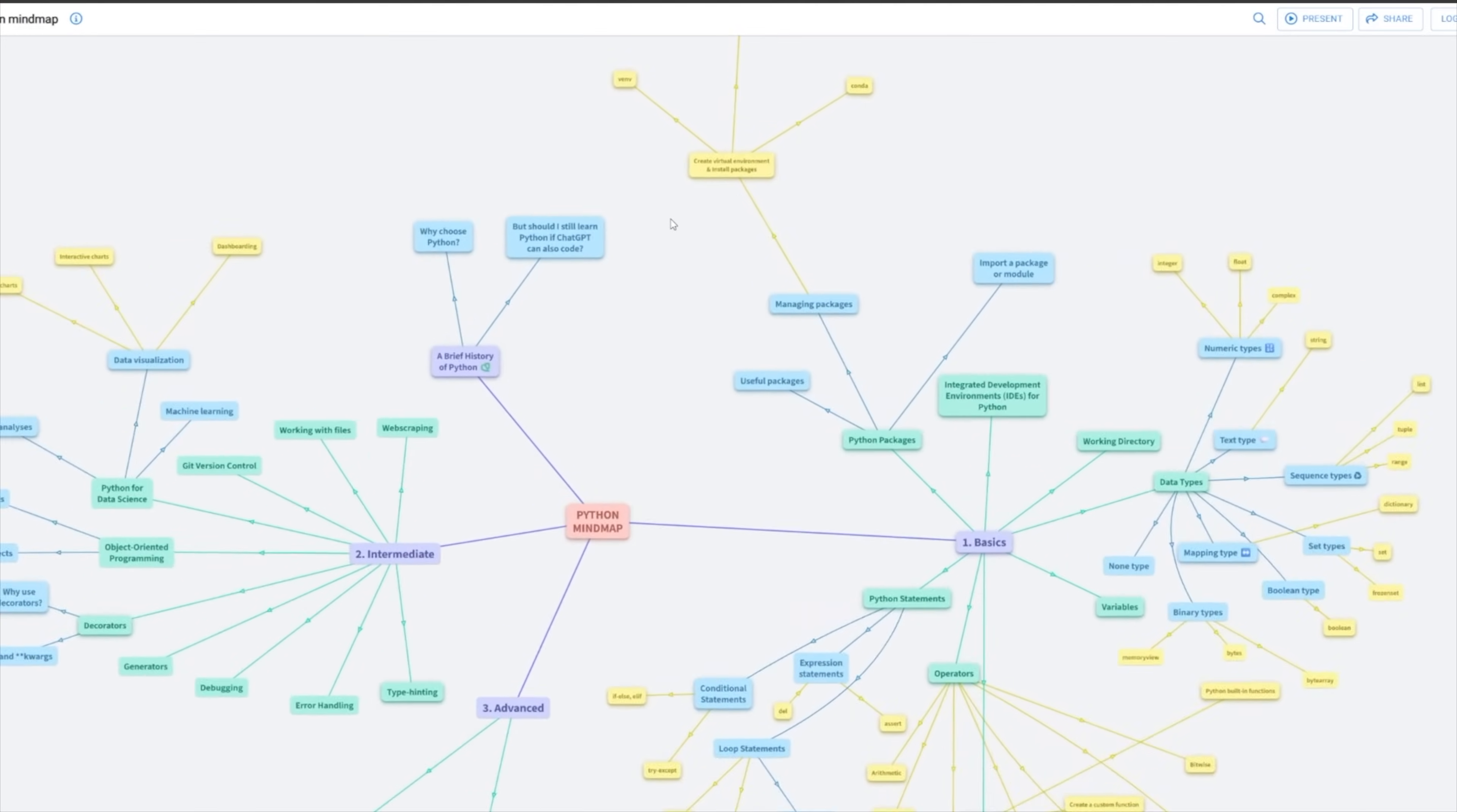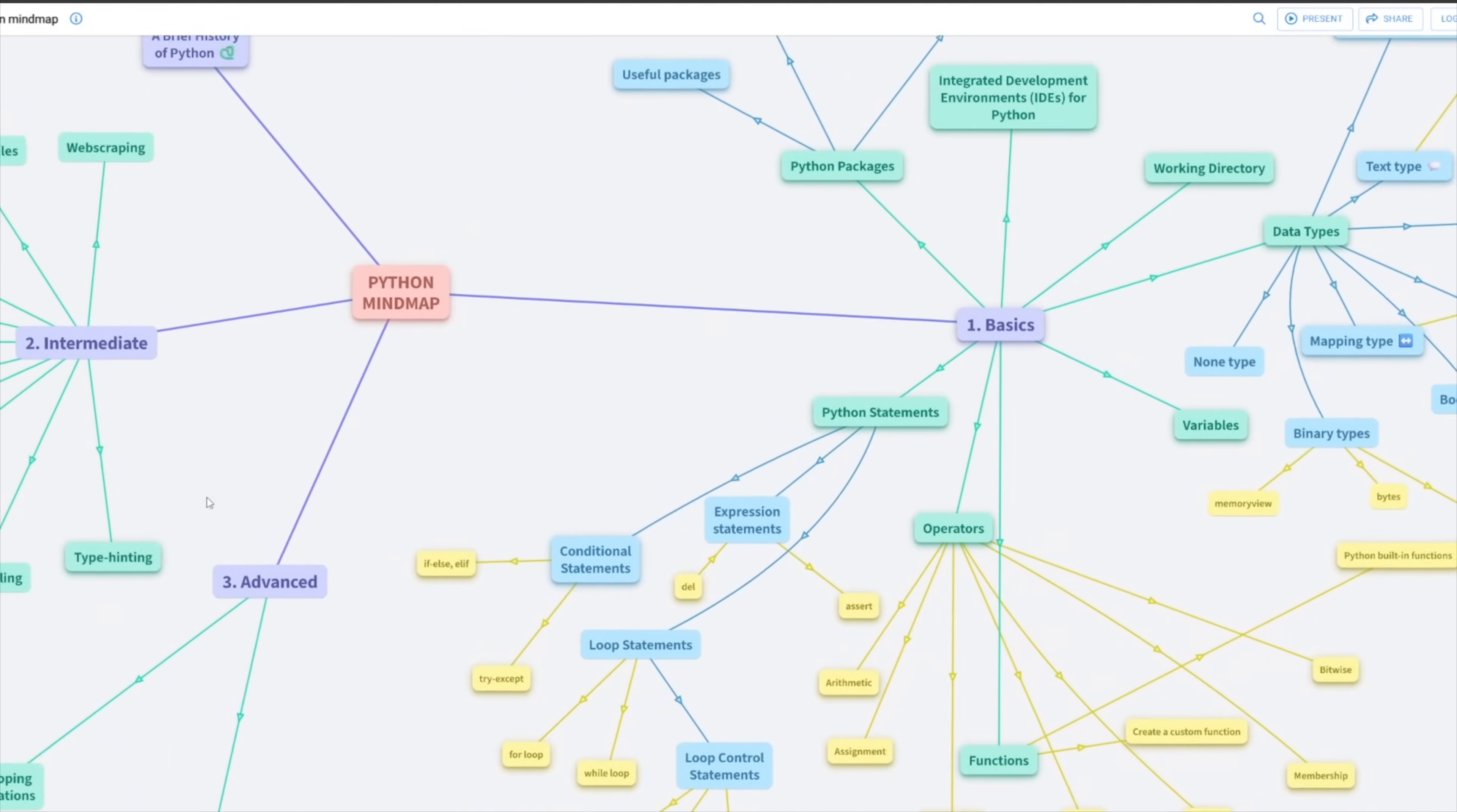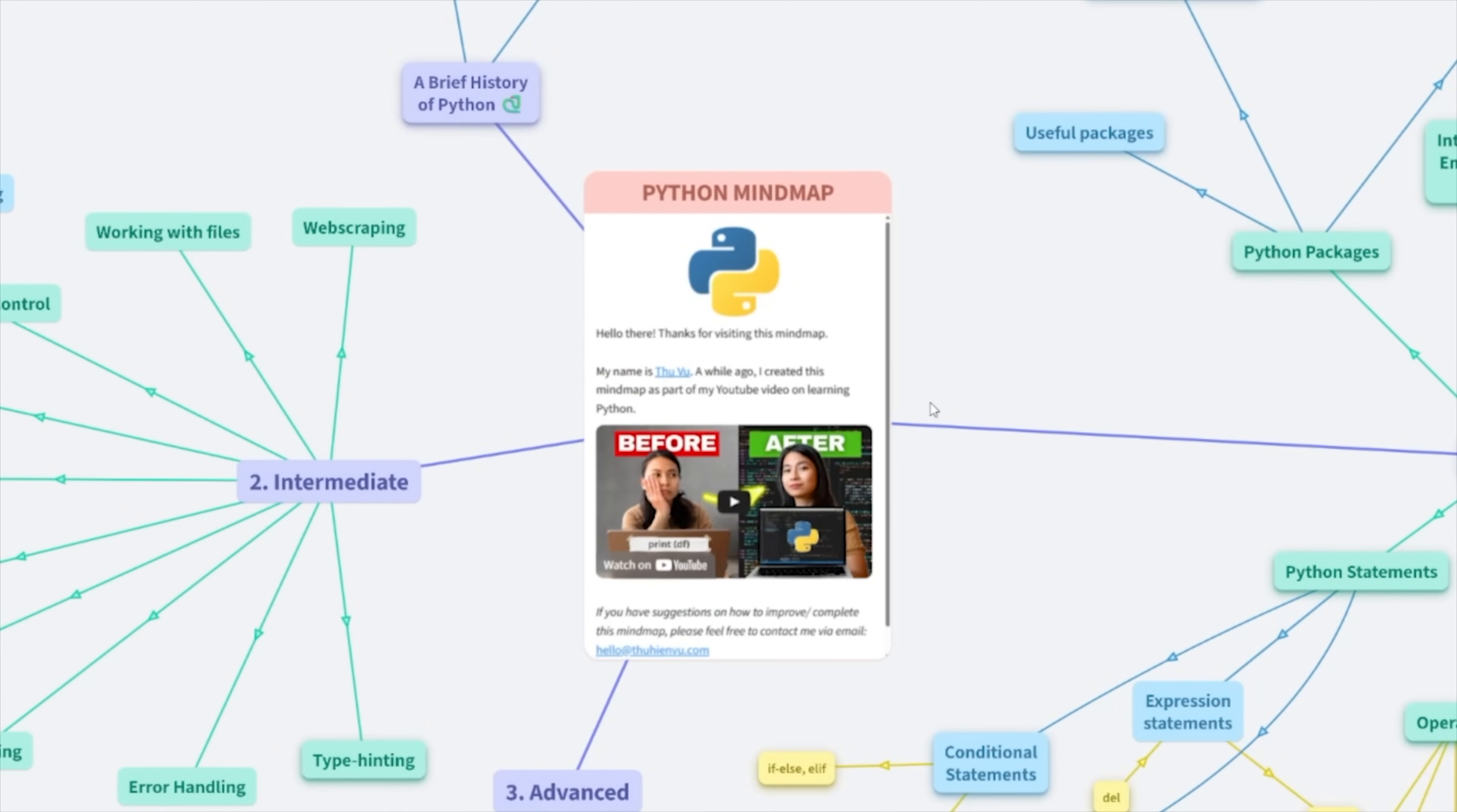Now, bullet point style notes like this are fine, but sometimes I find it a bit more intuitive and easier for my brain if I turn my notes into a mind map. I love mind maps because it's a great way to get a bird-eye view on a topic. You can zoom out to get a bigger picture and zoom in for more details.